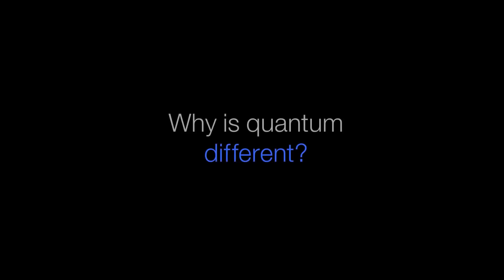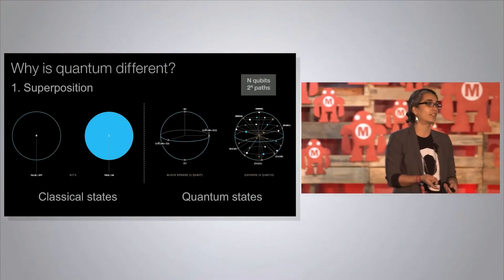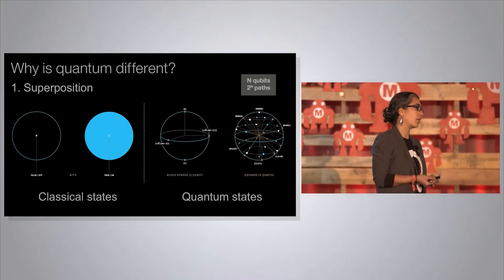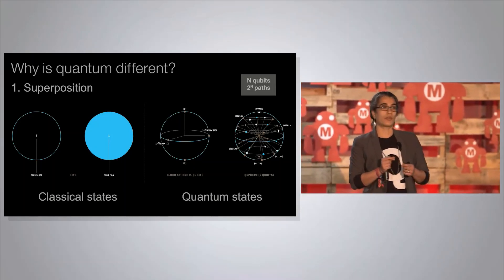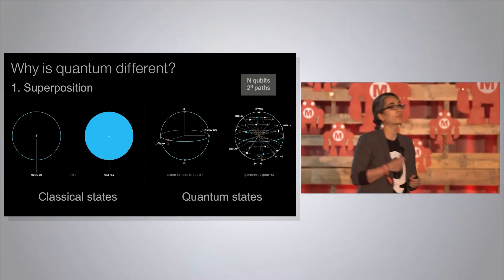So why do we think quantum computing is actually going to allow us to solve some of these problems we can't solve classically? It boils down to two fundamentally quantum effects. One of the effects is superposition. Classical information is basically a string of zeros and ones — everything that classical computing has enabled is boiled down to a sequence of zeros and ones. Quantum information has this property that the states can exist in a superposition of zero and one — not just zero, not just one, but a superposition. And you can also have complex superpositions of zero and one, so you start to be able to explore a much richer set of states.